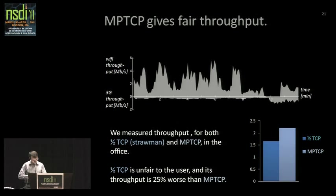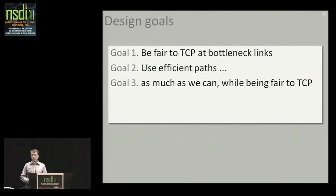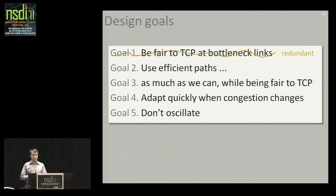So I've talked through three design goals: be fair to TCP at bottlenecks; use efficient paths as much as possible while being fair to TCP; and goal three is a very precise fairness statement that completely subsumes goal one. In the paper we described two further goals: adapt quickly when congestion changes, and avoid oscillation or route flap. I don't have time to talk through those two.